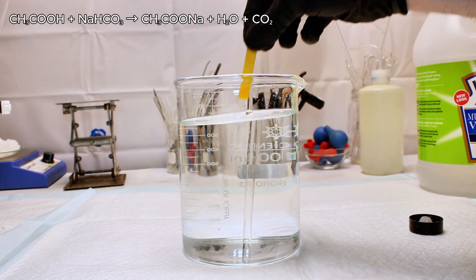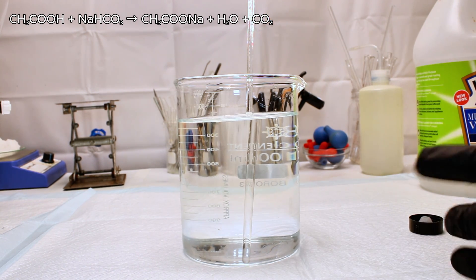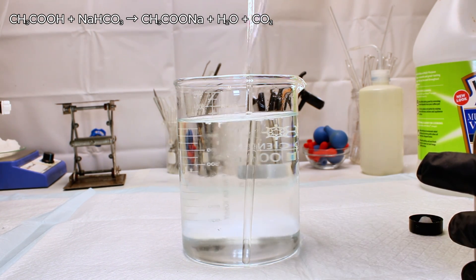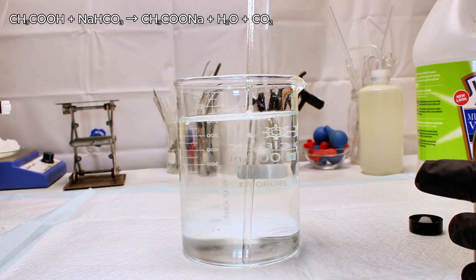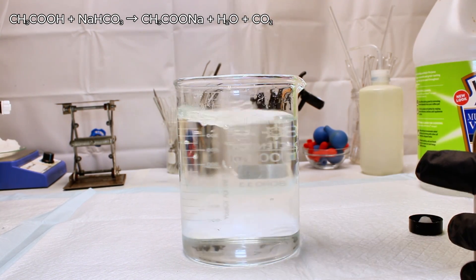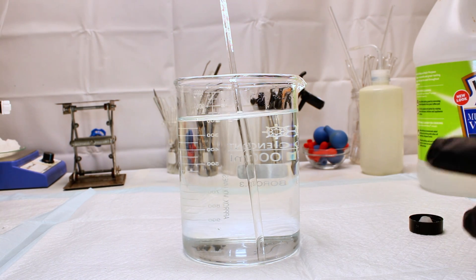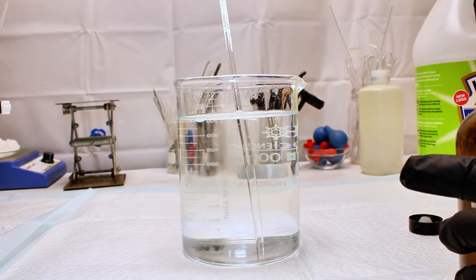Using sodium bicarbonate however would result in the formation of carbon dioxide, which would generate a lot of potentially annoying foam. Using sodium bicarbonate does have one benefit though in that you can use the bubbling to track the reaction, as no more carbon dioxide will be generated once all of the acetic acid has been neutralized.